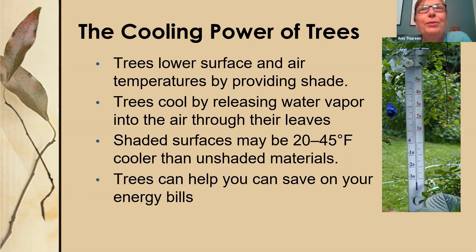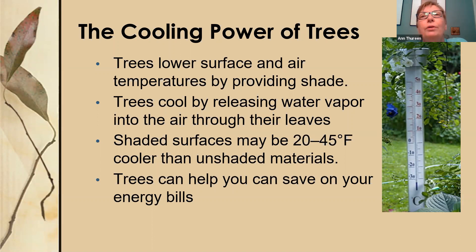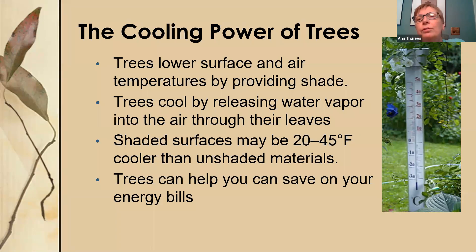How do trees improve and protect our water quality? They do so by reducing runoff and pollution from reaching our streams, rivers, lakes, aquifers, and watersheds. First, trees slow down and temporarily store runoff, which promotes infiltration of water into the ground. Tree roots help stabilize the soil and prevent erosion, and those tree roots and leaf litter create soil conditions that promote infiltration.